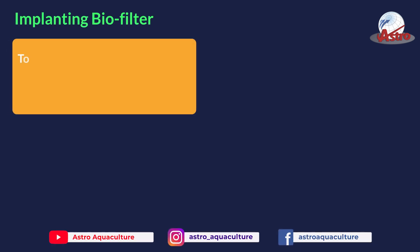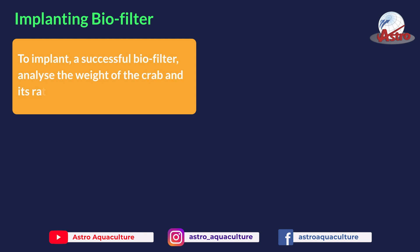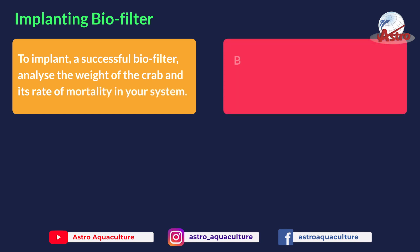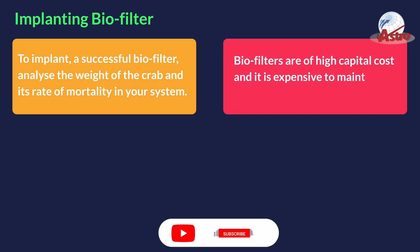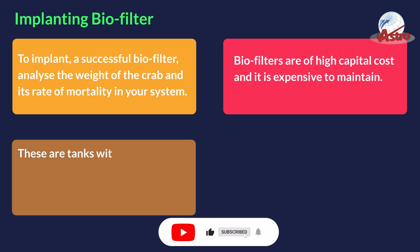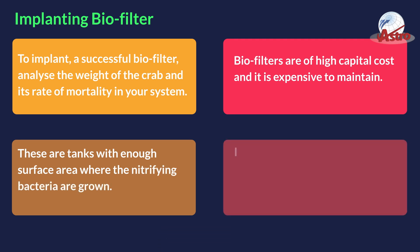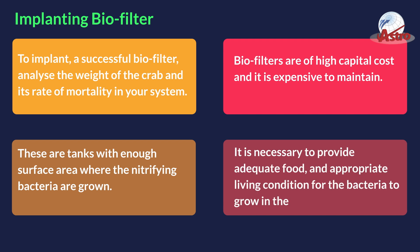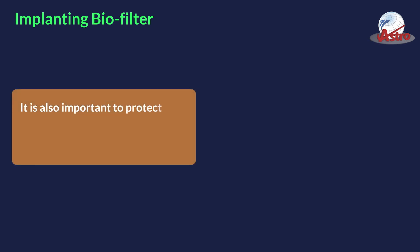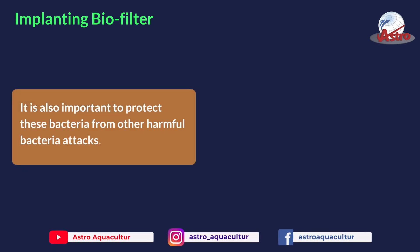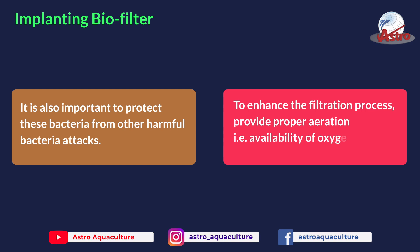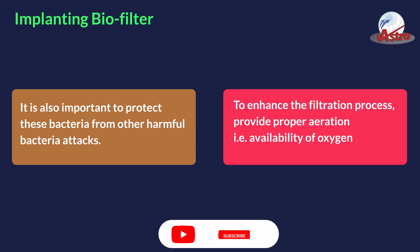Implanting a Biofilter. To implant a successful biofilter, analyze the weight of the crab and its rate of mortality in your system. Biofilters are of high capital cost and expensive to maintain. These are tanks with enough surface area where the nitrifying bacteria are grown. It is necessary to provide adequate food and appropriate living conditions for the bacteria to grow in the filter, and to protect them from harmful bacterial attacks. To enhance the filtration process, provide proper aeration — i.e., availability of oxygen.